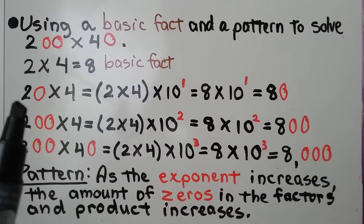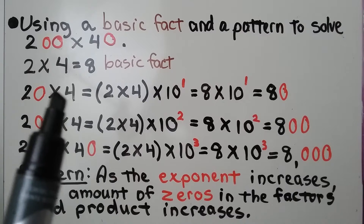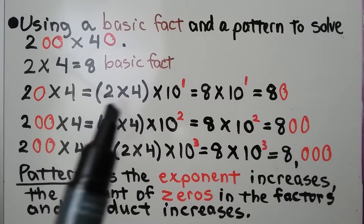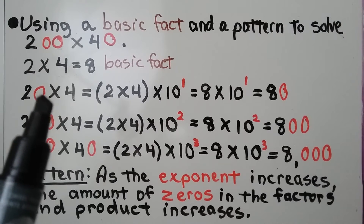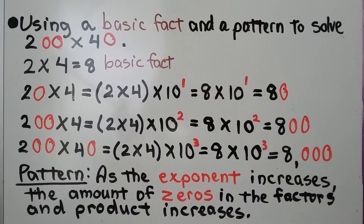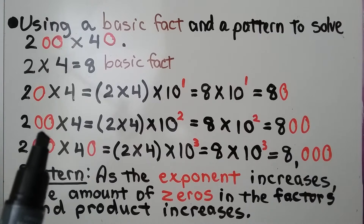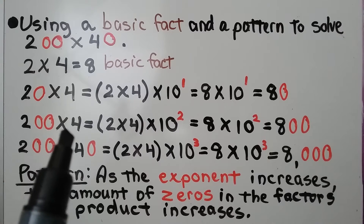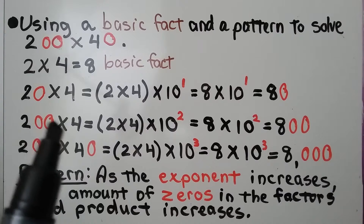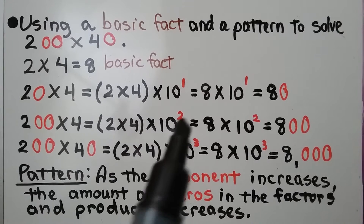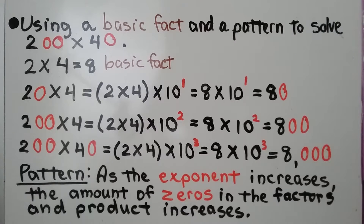We can add additional zeros and do 20 times 4. Our basic facts are 2 times 4, now times 10 to the first power because we have a zero here. That's equal to 8 times 10 to the first power, which is 80. Adding another zero, we have 200 times 4 — that's 2 times 4 times 10 to the second power, which equals 800.